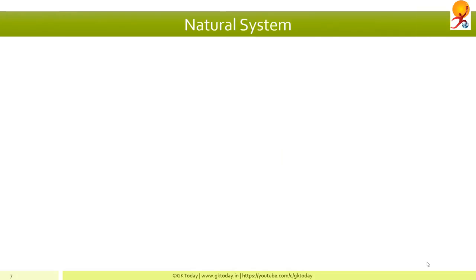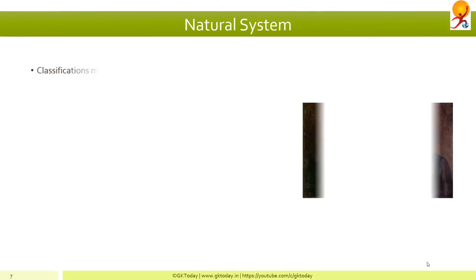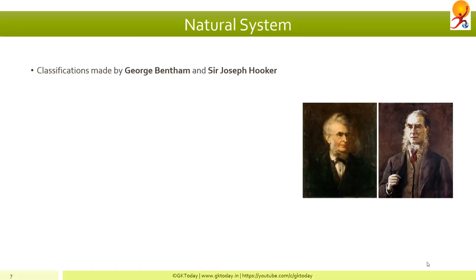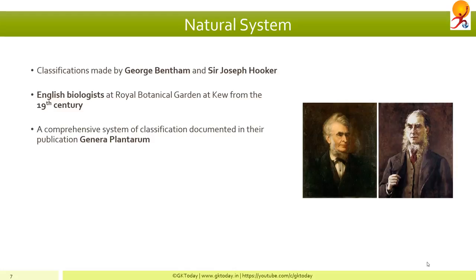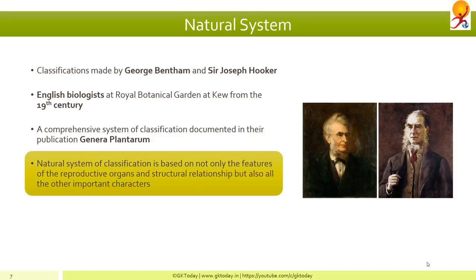Next, we come to the natural system. In the late 19th century, George Bentham and Sir Joseph Hooker were two English biologists at the Royal Botanical Garden at Kew, who adopted a more comprehensive system of classification, documented in their magnum opus, their publication Genera Plantarum. This system was based not only on features of the reproductive organs and structural relationships, but also all other important characters. This was known as the natural system, and they used it to place plants into several groups.